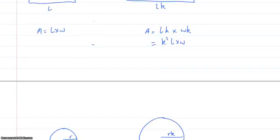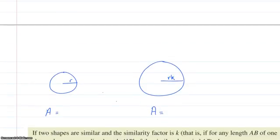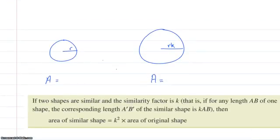It also works for circles. It works for every shape but it works for circles as well. So in this case here that's going to be pi r squared and this one over here it's going to be pi times the radius squared which is actually rk squared. So that's pi times r squared times k squared. So again the area of a similar shape is equal to k squared multiplied by the area of the original shape.